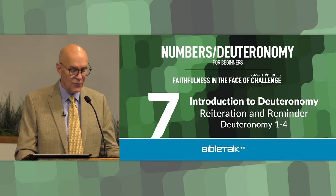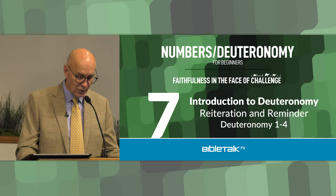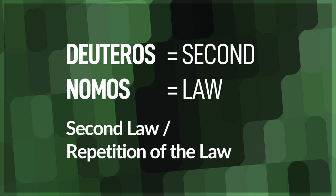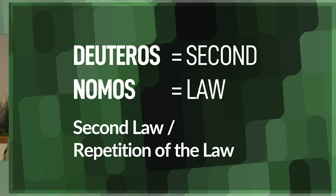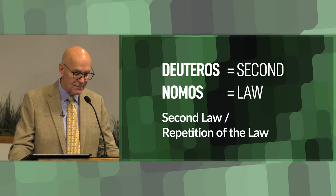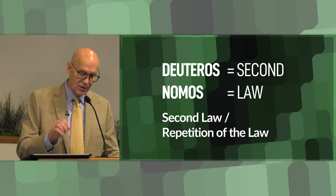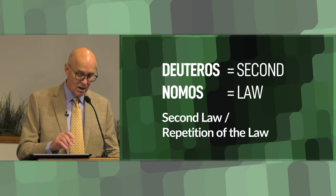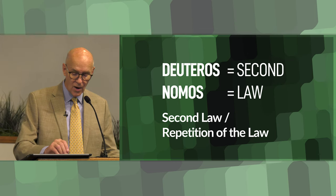The term Deuteronomy derives from the Greek words deuteros, meaning second, and nomos, meaning law. Thus, Deuteronomy can be understood to mean second law or repetition of the law.